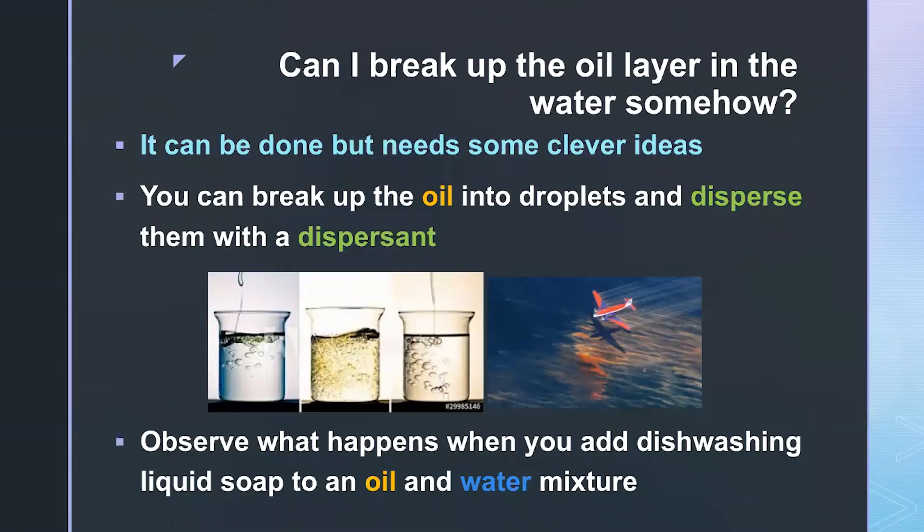In the ocean, if you have a light crude oil spill, you want to try to skim as much of the oil as possible. But if you're not able to skim all of it, maybe you would want to try to break up the oil layer in the water somehow. So can we really do that? It can be done, but you need some clever ideas. One of the ideas is to use what's called a dispersant. A dispersant is a chemical that can help break the oil into smaller droplets. In oil spills in the ocean, sometimes we spray the dispersant on top of the surface of the water to break up the oil.